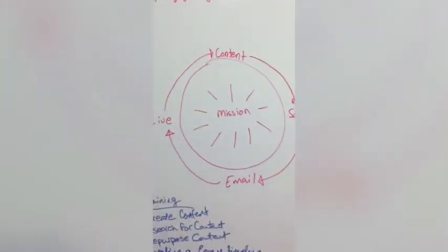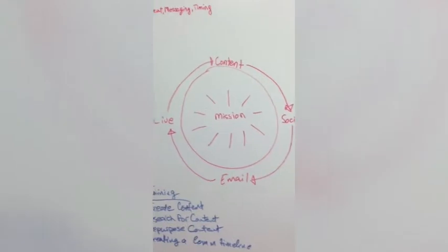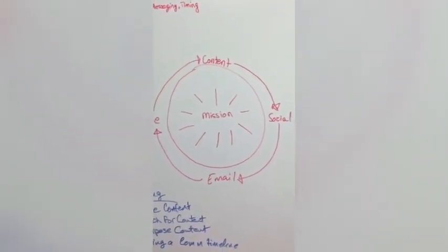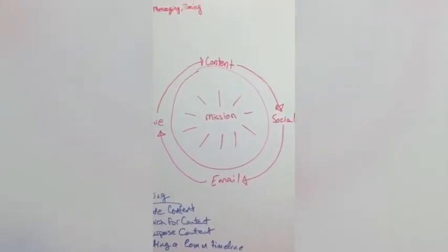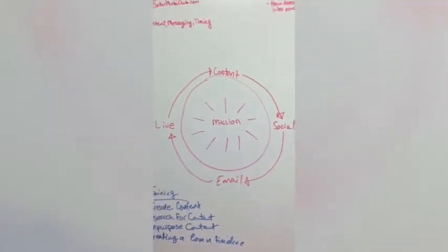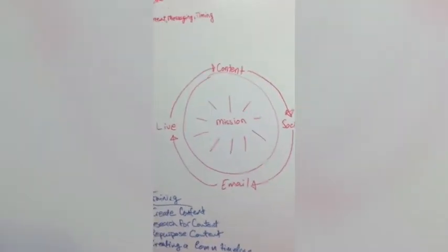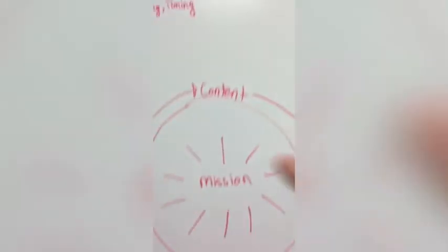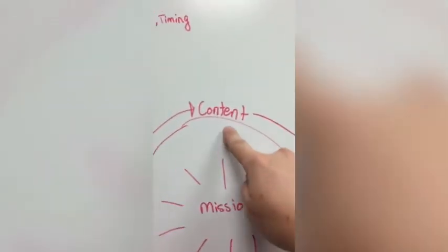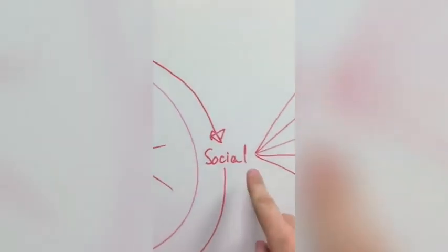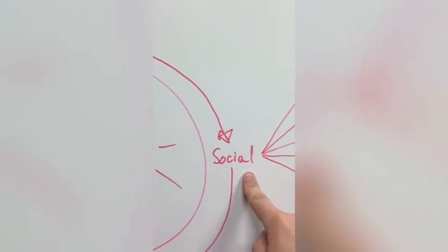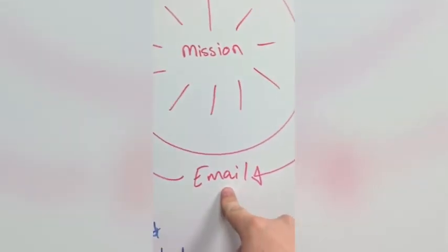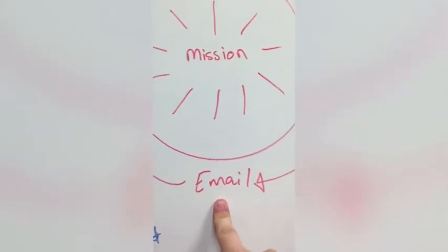Here is the diagram I came up with. At the very center of everything you do is your mission — why do we exist as an organization. The mission has to be central, and then around that you have four components: your content strategy, your social strategy (how you are represented on social), and what I've identified as an email strategy — though it could be more than just email.